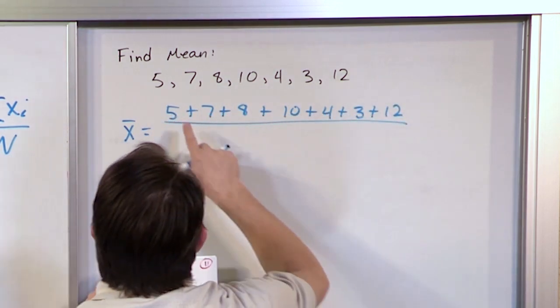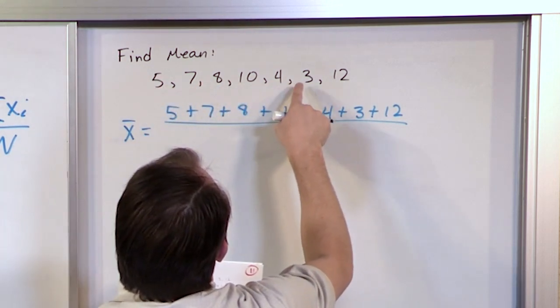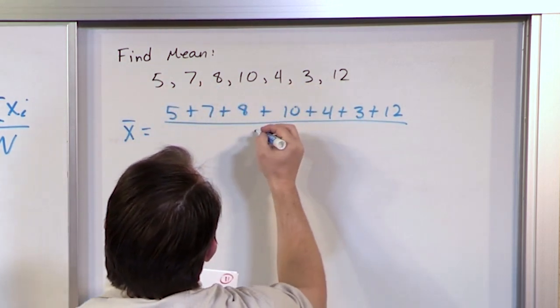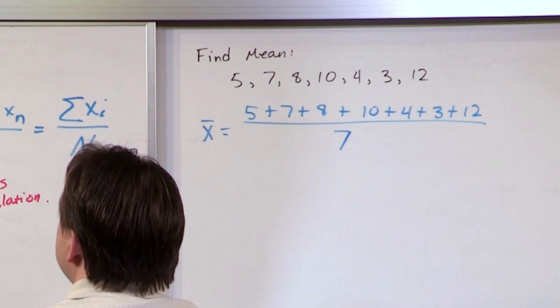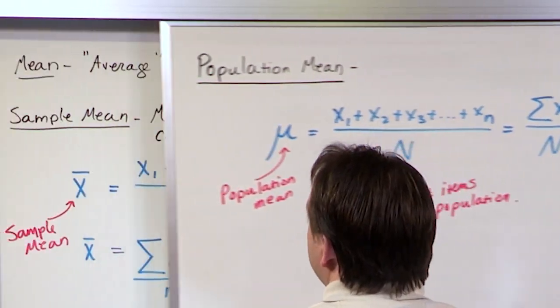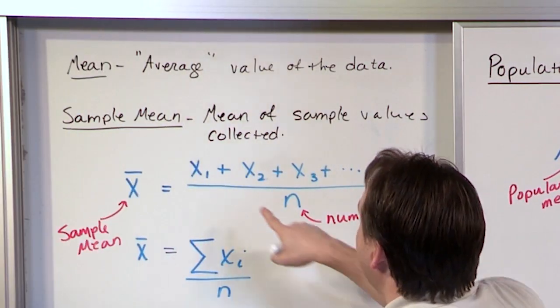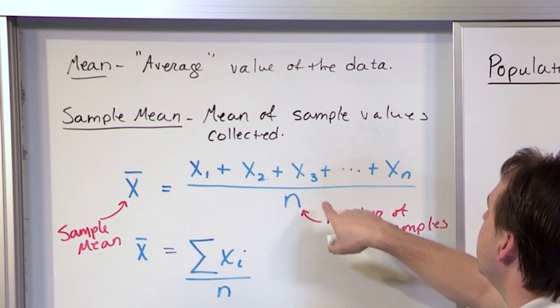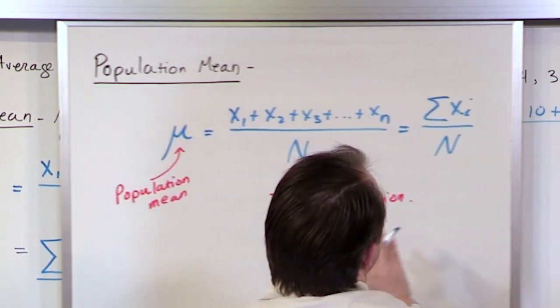After we get that sum, we're going to divide the whole thing by 7 values here. This is exactly what the sample mean says — we add up all of the values and we divide by the number of samples that we have.